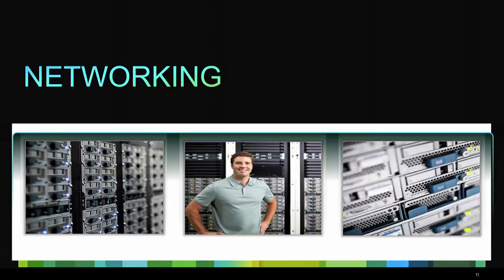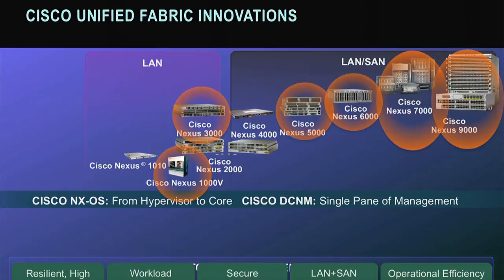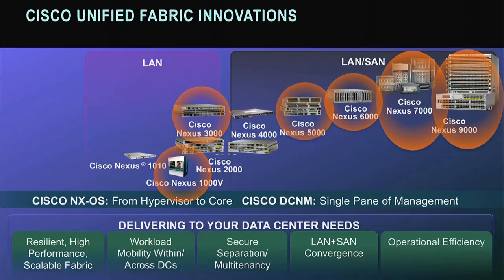Now let's take a deep dive into the Nexus and CSR product lines. The Cisco Nexus plugin for Neutron supports essentially every Nexus in the product line — all the way from the 1000, the software-based solution, to the new 9000. It also supports Nexus 5000, 6000, and 7000 — very common components in, say, a VBlock or a FlexPod.